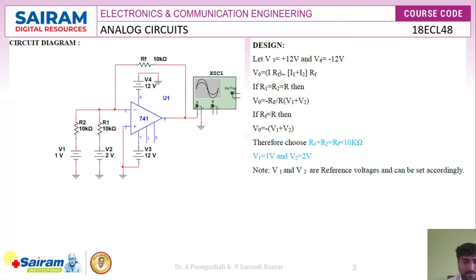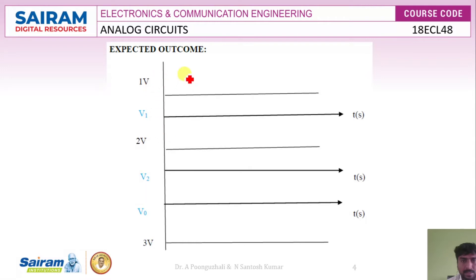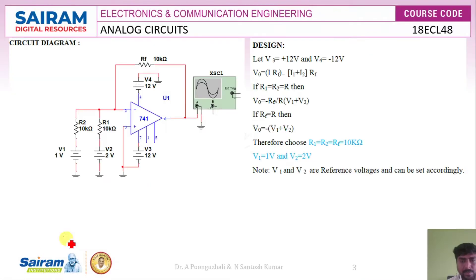This would be the expected output. When we apply input voltages V1 and V2, we get an output equal to 3 volts. The procedure is to rig up the circuit as shown in the figure, switch on the power supply, apply different values of V1 and V2, and then measure the output across the CRO.